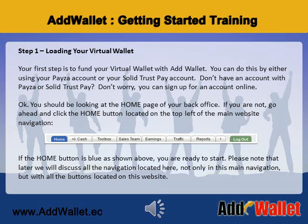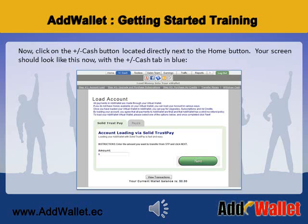You should be looking at the home page of your back office. If you are not, go ahead and click the Home button located on the top left of the main website navigation. If the home button is blue as shown above, you are ready to start. Please note that later we will discuss all the navigation located here, not only in this main navigation, but with all the buttons located on this website. Now, click on the plus minus cash button located directly next to the home button.